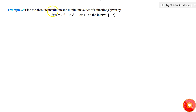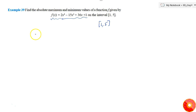In this question we are asked to find the absolute maximum and minimum values of a function f(x) on the interval [1, 5]. First, let us try to find the minimum and maximum values by setting f'(x) equal to 0.